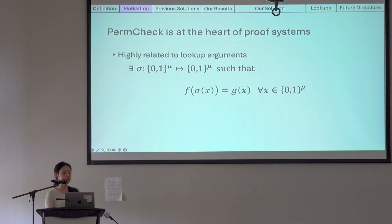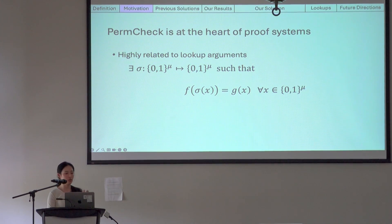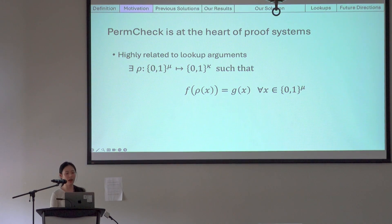Permutation check is also highly related to lookup arguments. Here we have the basic permutation check formulation, and all we need to change to turn this into a formulation for lookups is to replace the sigma with a lookup polynomial row that now maps from one hypercube to another hypercube of different dimension. Then in the formulation, f will represent the lookup table, and g will represent the witness vector.